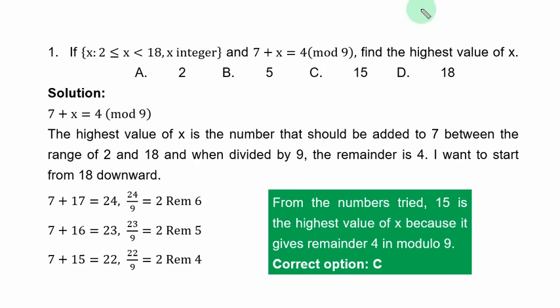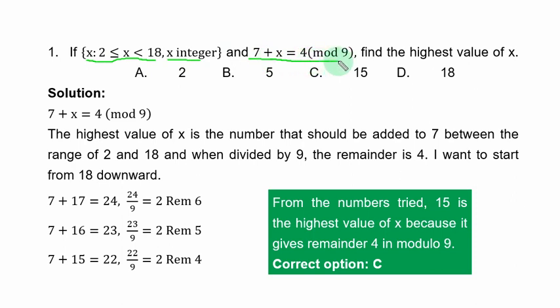Question 1: given the set where 2 ≤ s < 18 and s is an integer, and 7 + s ≡ 4 (mod 9), find the highest value of s. Here you must be careful with the range — the given inequality symbol simply means we are considering values from 2 to 17.